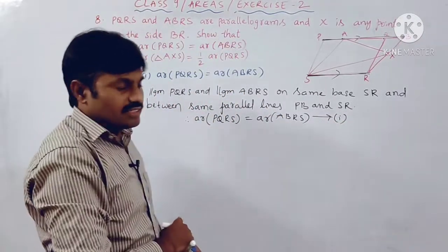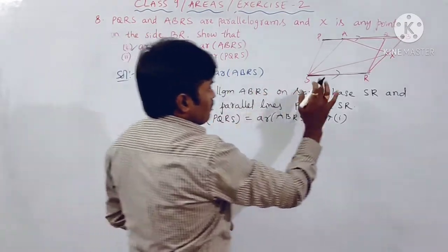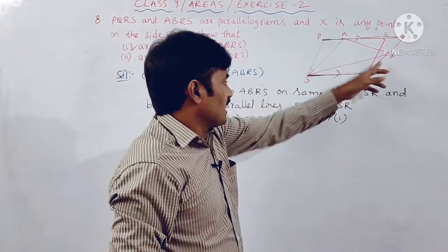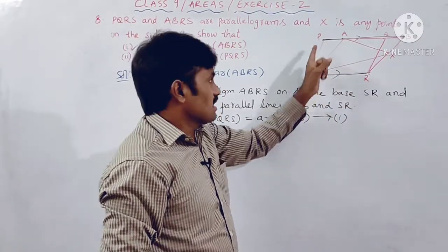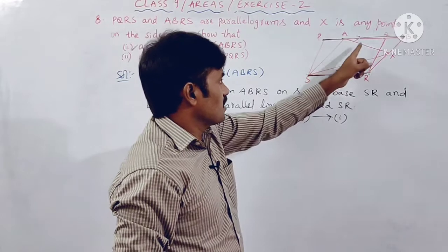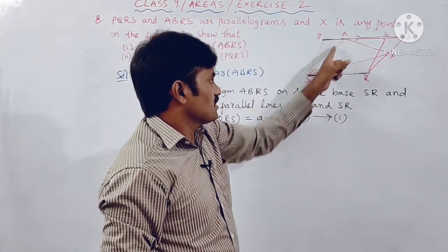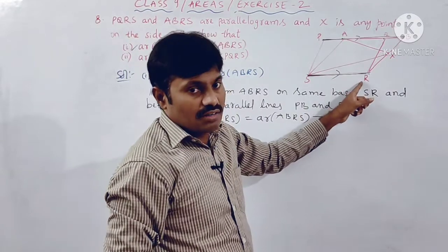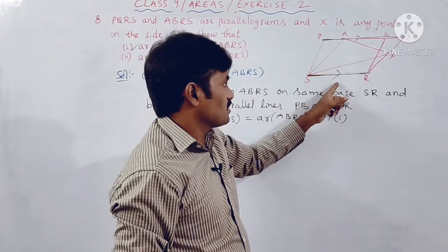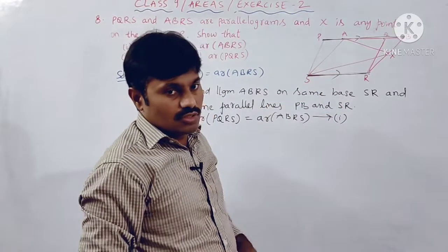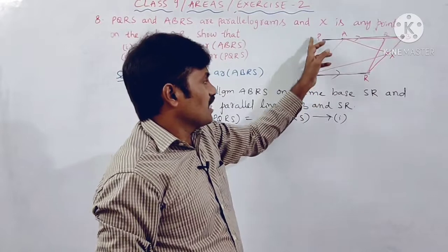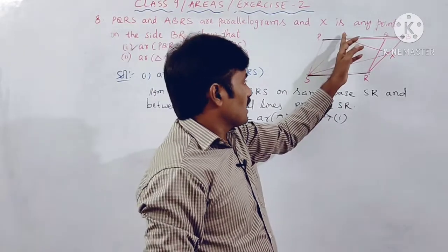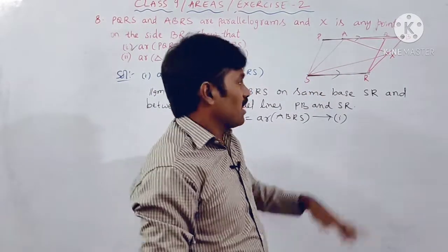Now to prove the second part: we need to show the relation between area of triangle AXS and parallelogram PQRS. There is no direct link because triangle AXS has base AS while parallelogram PQRS has base RS — they don't share the same base. So, to prove area of triangle AXS equals half of area of parallelogram PQRS, we will use the result from part one.